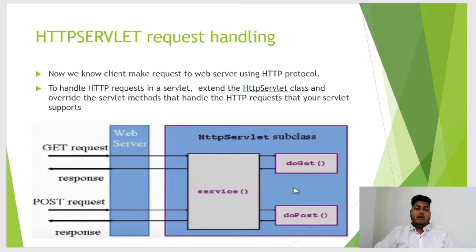Now we will look at HTTP servlet request handling. The client makes a request to the web server using HTTP protocol. To handle HTTP requests in a server, we extend the HttpServlet class and override the servlet method that handles the HTTP request your server supports. As you can see in the diagram, the GET method and POST method request the web server and get a response. Internally, the web server gets the response from the service method, which uses doGet and doPost to generate the response — that is part of the HttpServlet subclass.